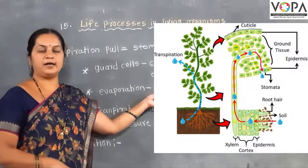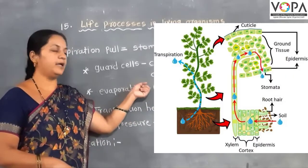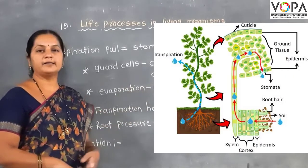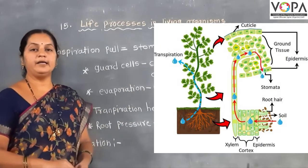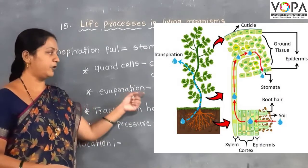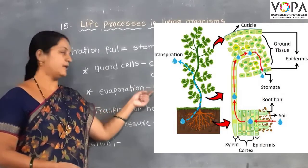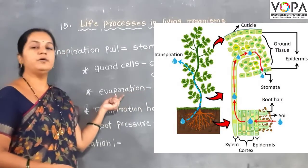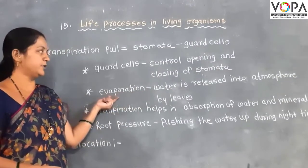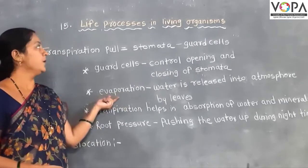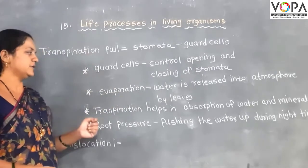The plants release water into the atmosphere. This is an evaporation process — water from the plants goes into the atmosphere through transpiration processes.